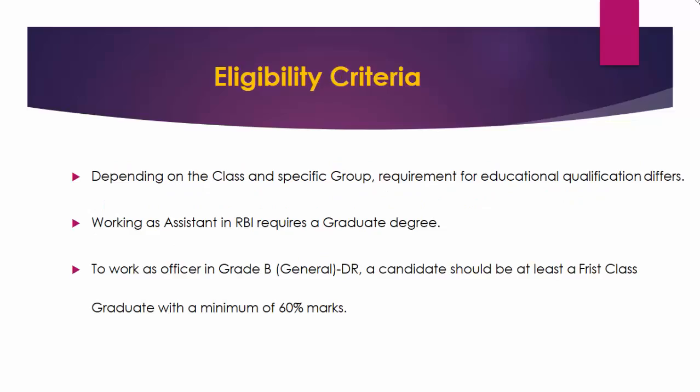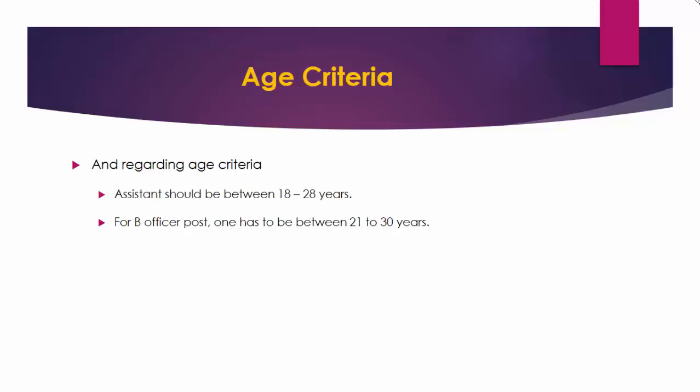Eligibility Criteria: The eligibility criteria required to become an RBI officer differs from one class to another and from one group to another. Depending on the class and specific group, educational qualification requirements differ. For example, working as an assistant in RBI requires a graduate degree in any discipline with 50% marks for general category students. To work as an officer in Grade B General, a candidate should be at least a first class graduate with a minimum of 60% marks in aggregate of all semesters or years. Regarding age criteria, an assistant should be between 18–28 years to be eligible to apply, and to apply for a Grade B officer post, one has to be between 21–30 years.